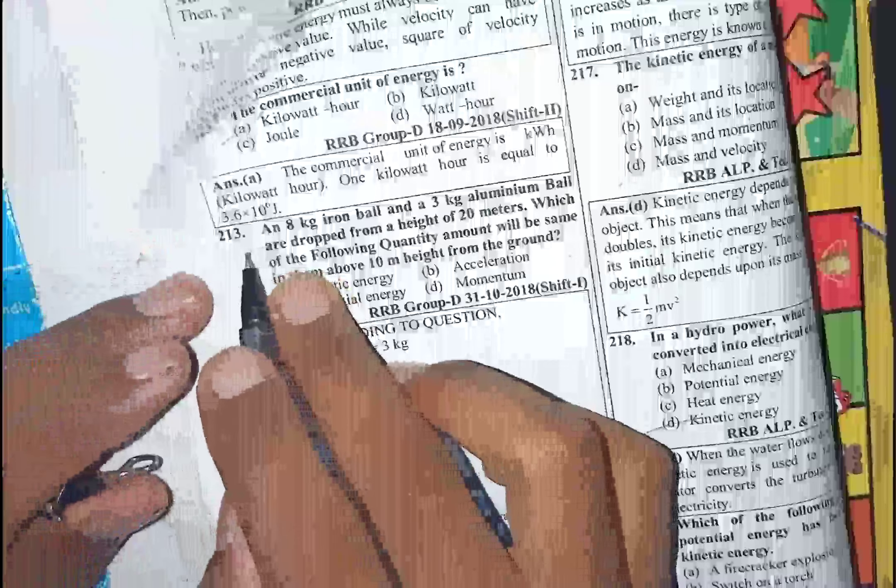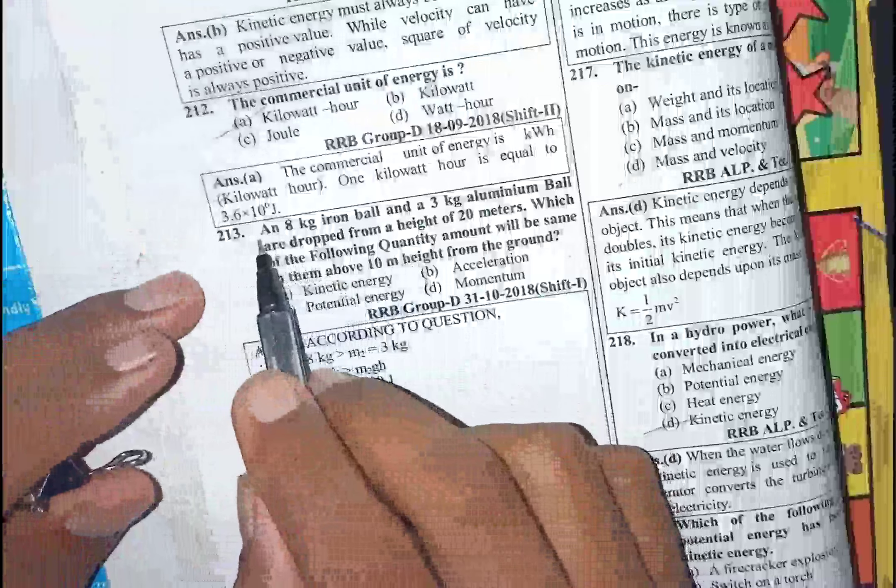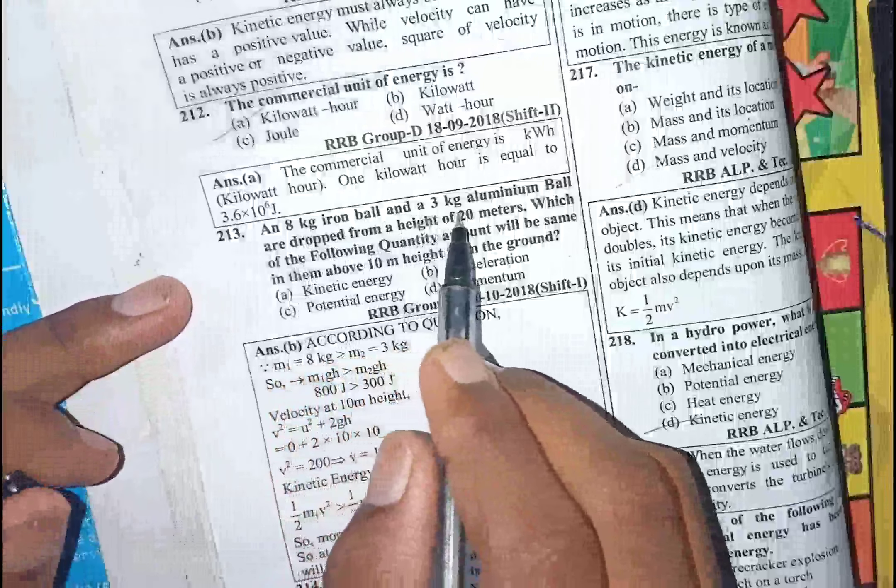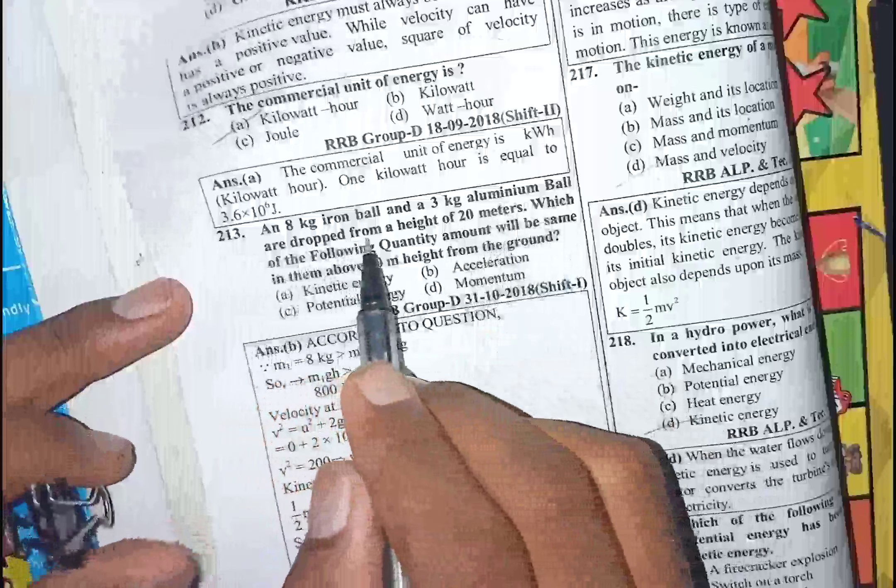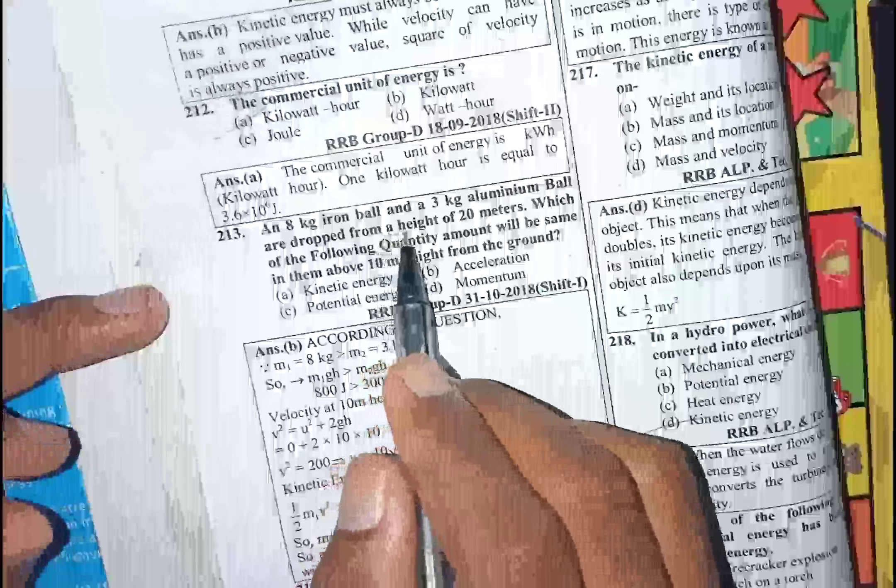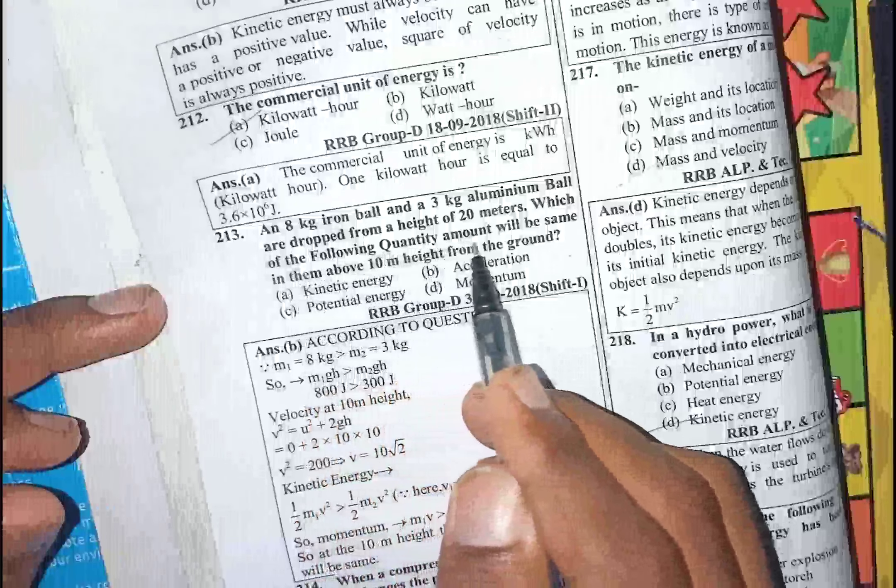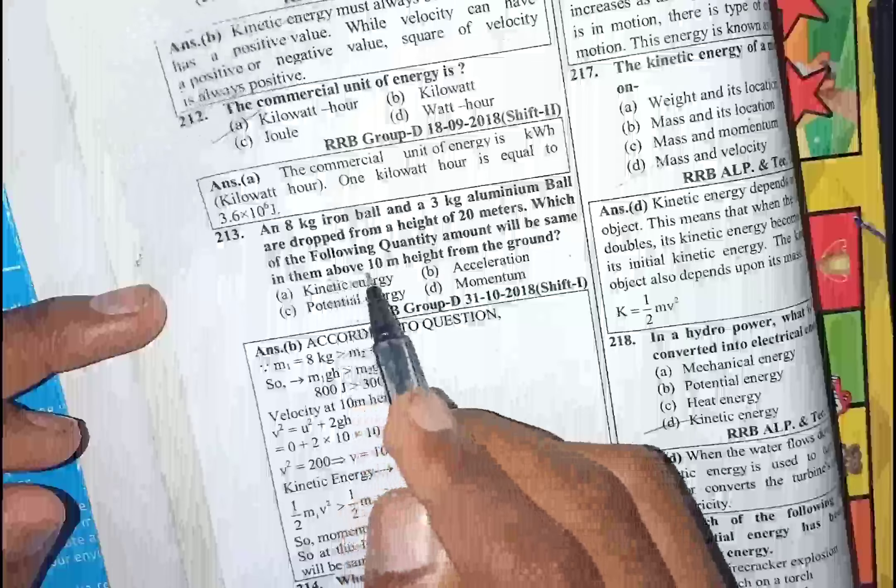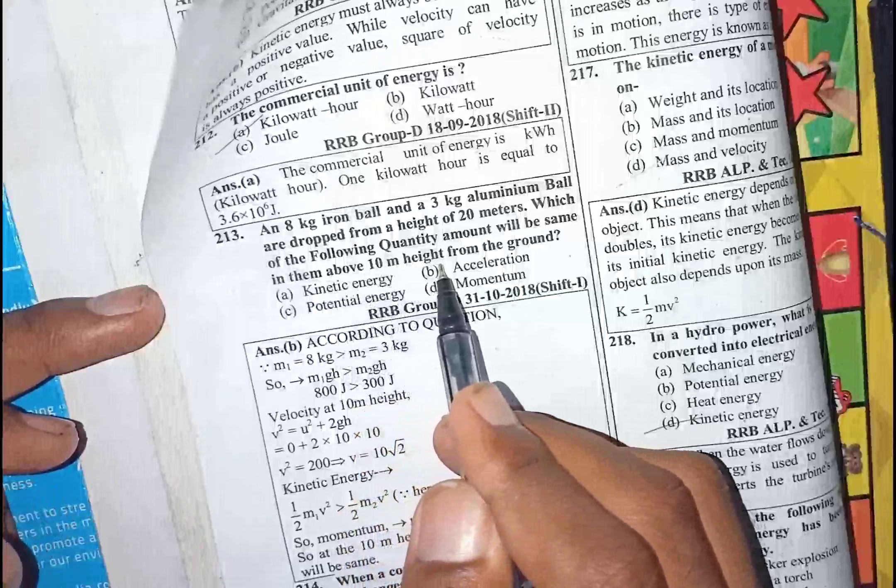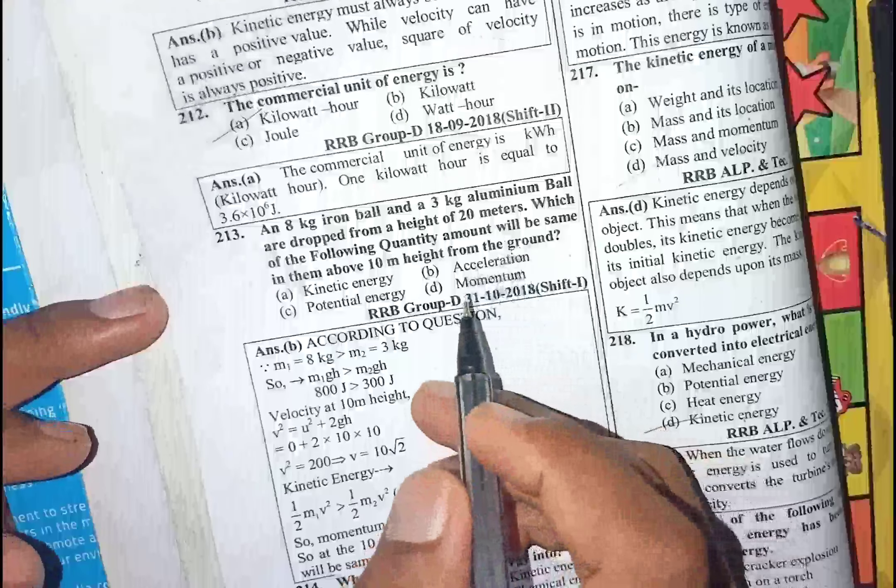Next question, this is a numerical problem. An 8 kg iron ball and a 3 kg aluminum ball are dropped from a height of 20 meters. Which of the following quantities will be the same when they are at a height of 10 meters from the ground?